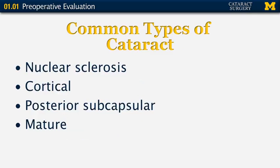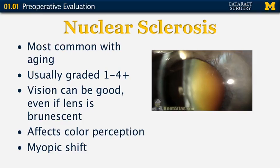There are many types of cataract. The four that I'll mention here are nuclear sclerosis, cortical, posterior subcapsular, and mature. A nuclear sclerotic cataract is the most common type seen with aging — almost everybody by age 70 shows some nuclear sclerosis. It's usually graded on a scale of 1 to 4. I've seen some lenses that are extremely dense yellow, almost brown, and I might give them a 4++ grading.